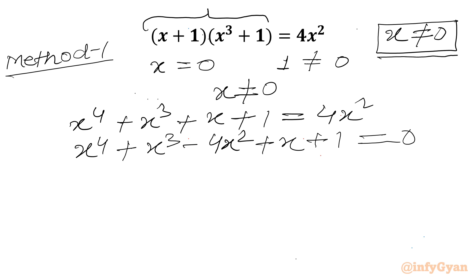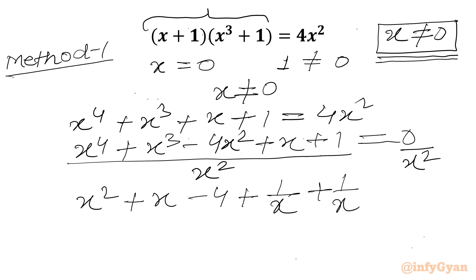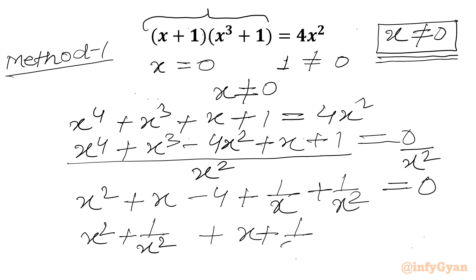Now x is non-zero, so we can divide both sides by x². So x⁴/x² gives x², x³/x² gives x, then minus 4, plus 1/x, plus 1/x² equals 0. Now grouping the first term with the last term, and the second term with the second last term, we write x² + 1/x² + x + 1/x - 4 = 0.